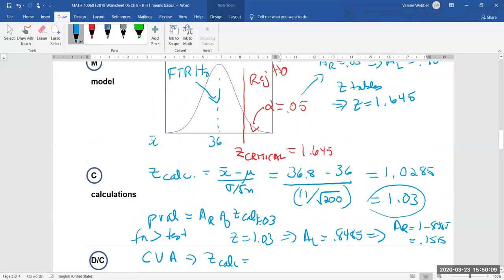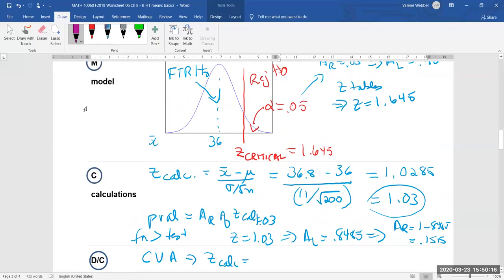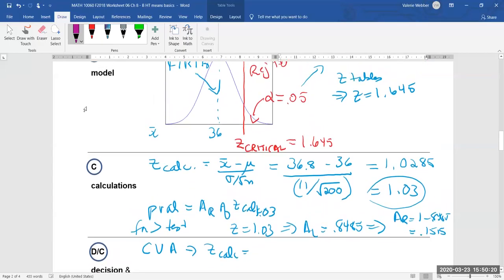And I'm going to pick a different color. Let's pick a purple one here. And zed calculated of 1.03 is going to show up. So I'm going to write it there. 1.03. Well that's not in this region here. It's going to be somewhere around here.